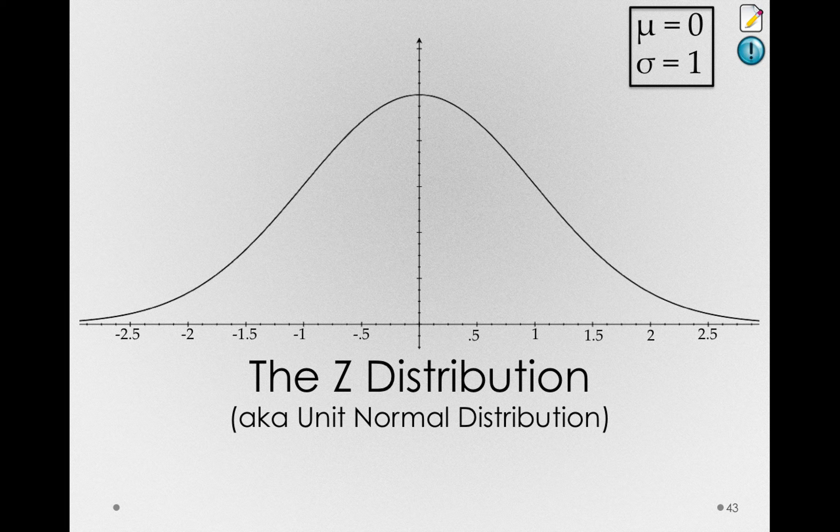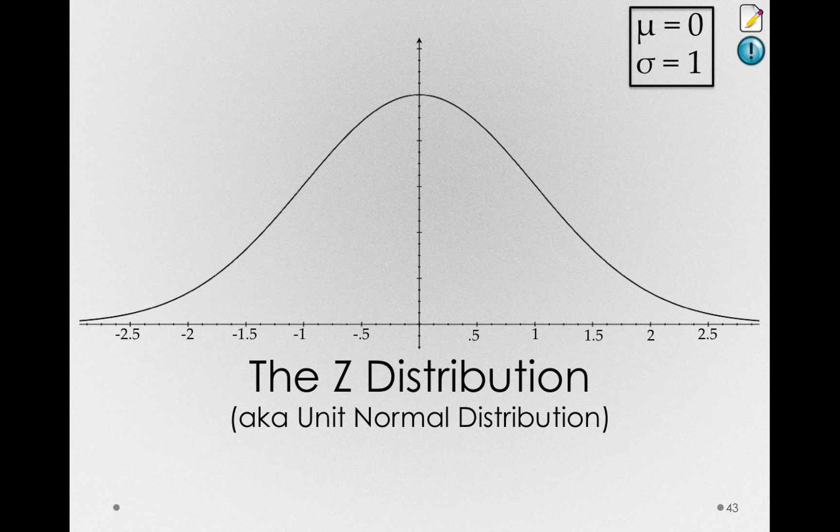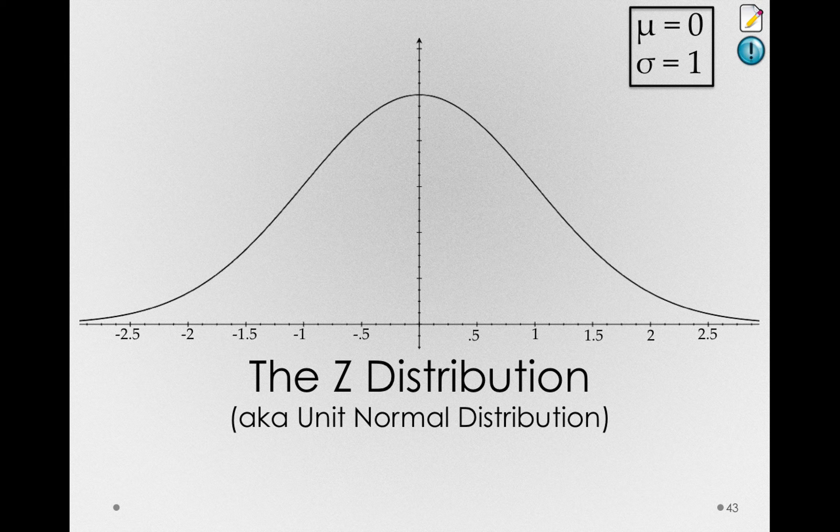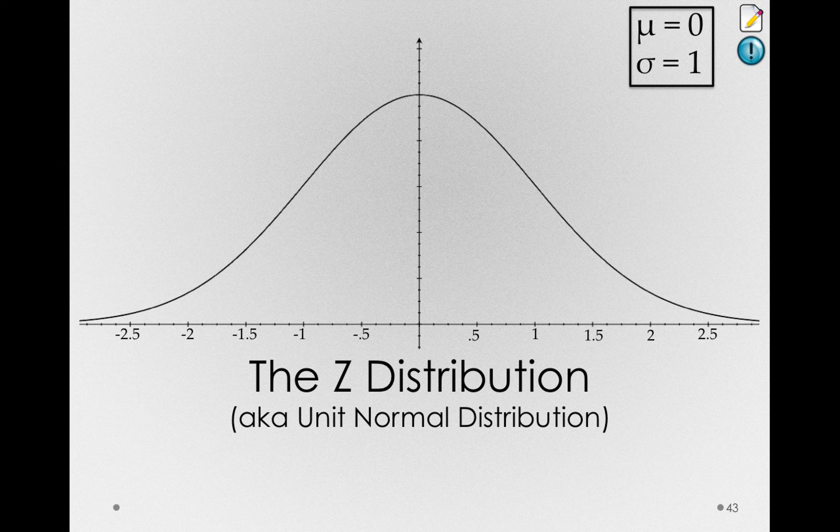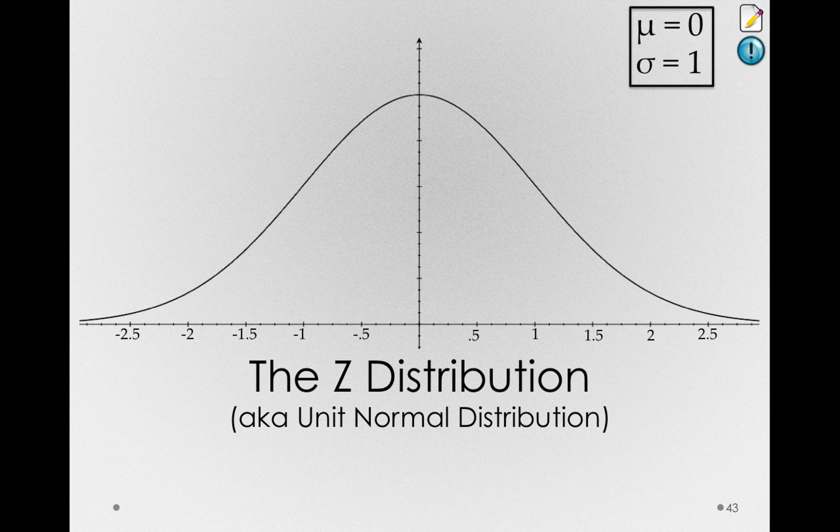Remember, what's convenient about z-scores is we can bring any other distribution to have a mean of 0 and a standard deviation of 1. If the distribution we're converting starts off with a normal shape, then, after we z-score all the values, it will be this distribution.